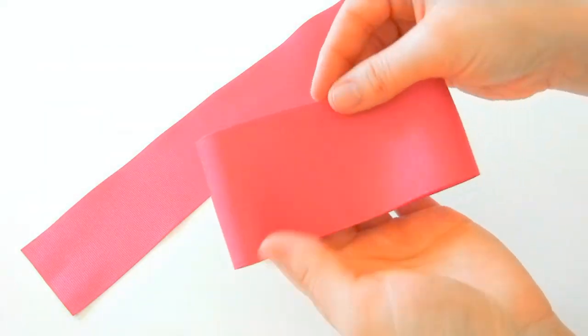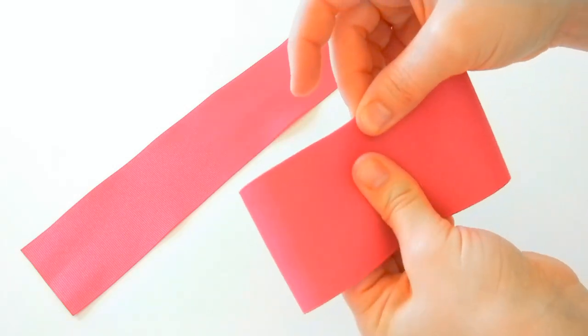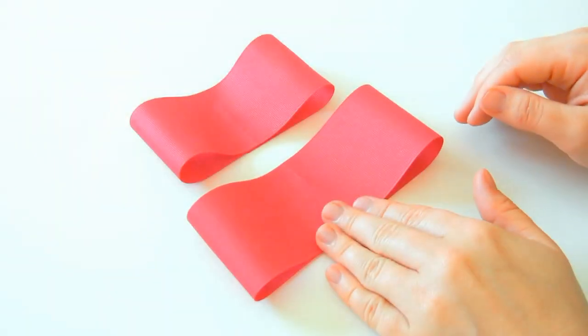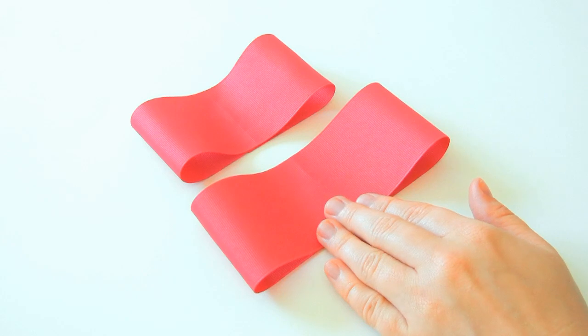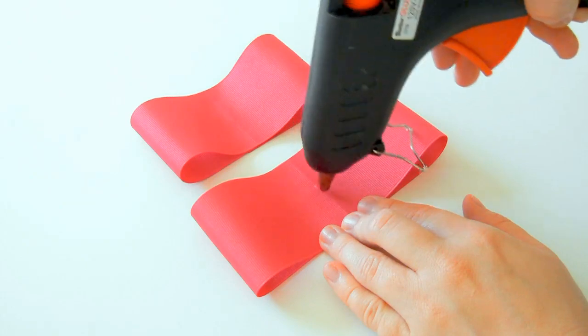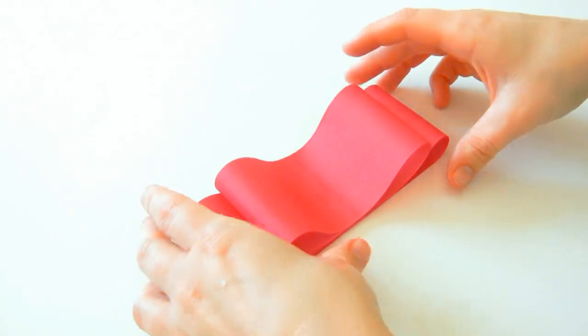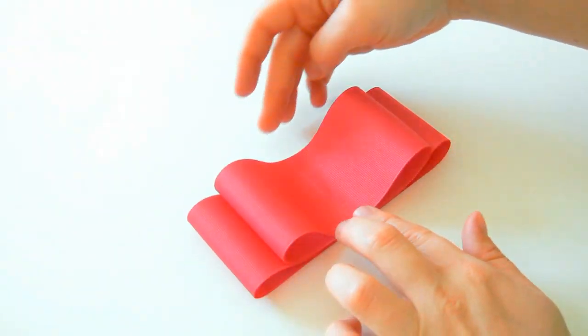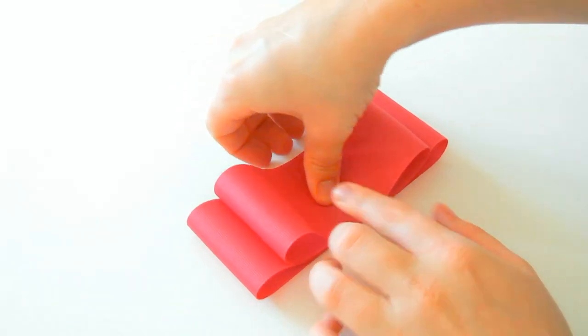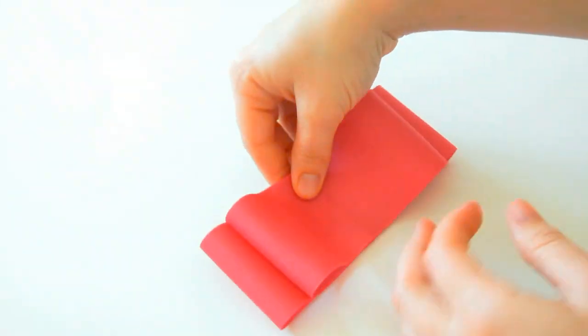So we've got the beginning of our bow. Now we're going to do the same exact thing with this other piece of ribbon. Now we're going to stack these two bows. Take your hot glue and a tiny amount in the center and place your top one in the center, making sure that the edges of the ribbon all line up.